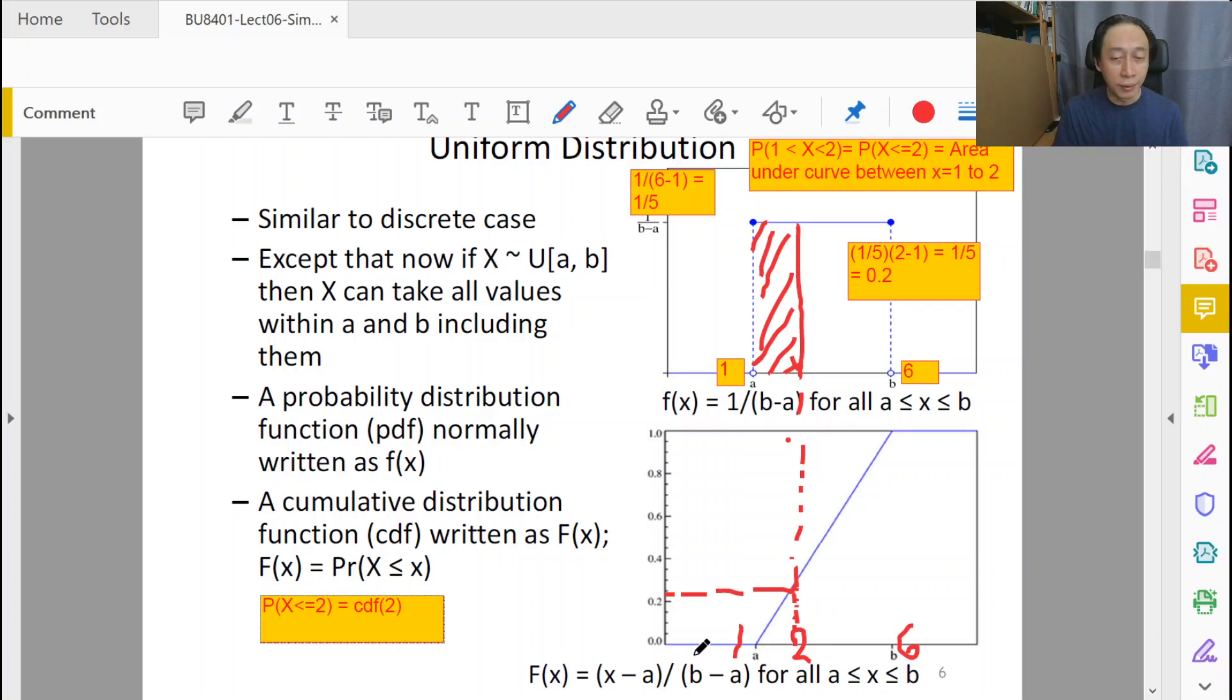Once we have a formula we can use the CDF formula to calculate any value that we like. Earlier our x was just two, a was one, so (2-1) is one, b was six, so (6-1) is five, so one over five gives us 0.2. Basically this F(x) line, the CDF line, gives us the equation for this curve, which is basically a line from zero to one, from y=0 to y=1, from x=1 to x=6.